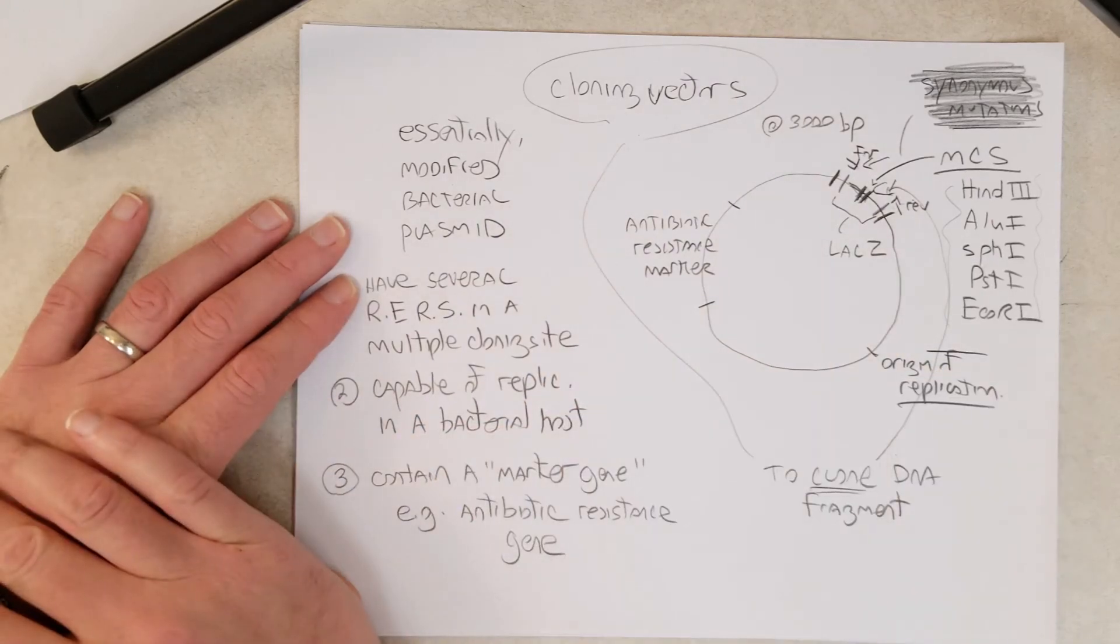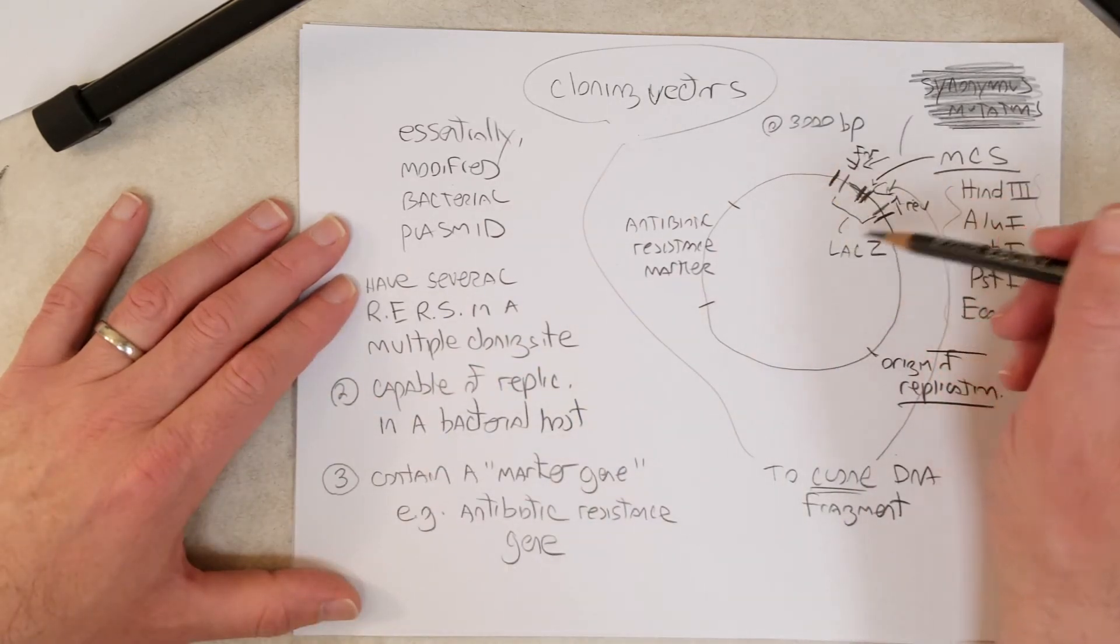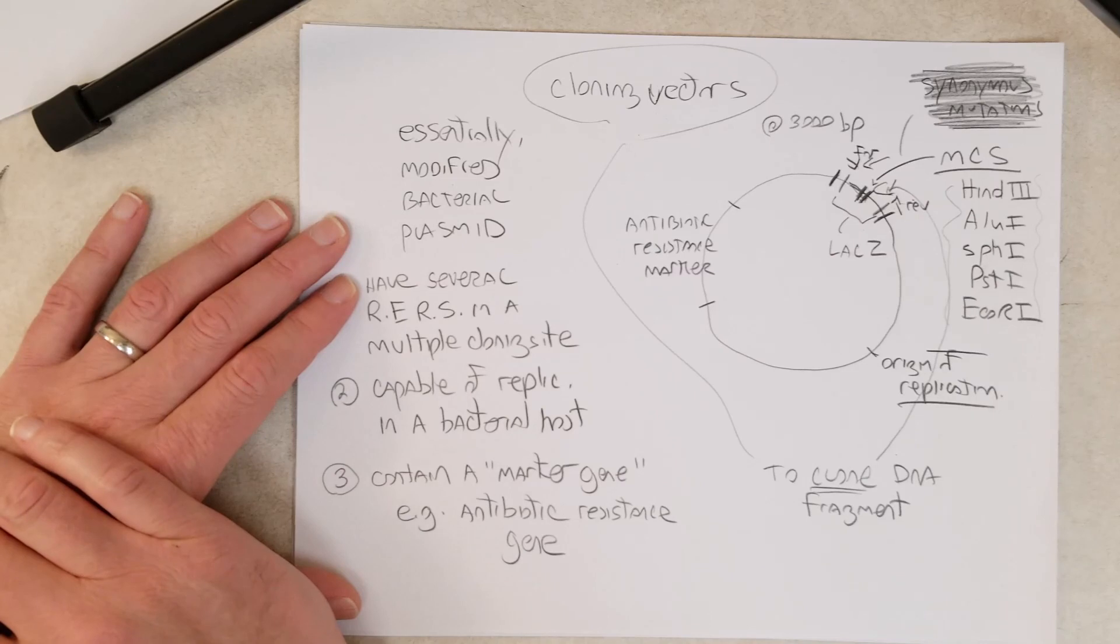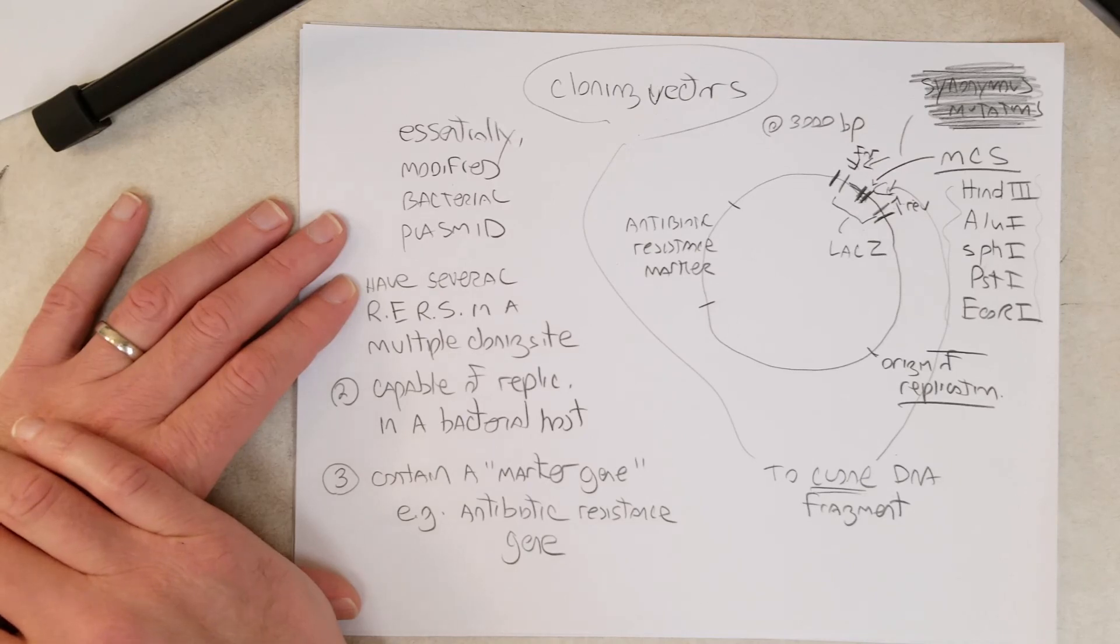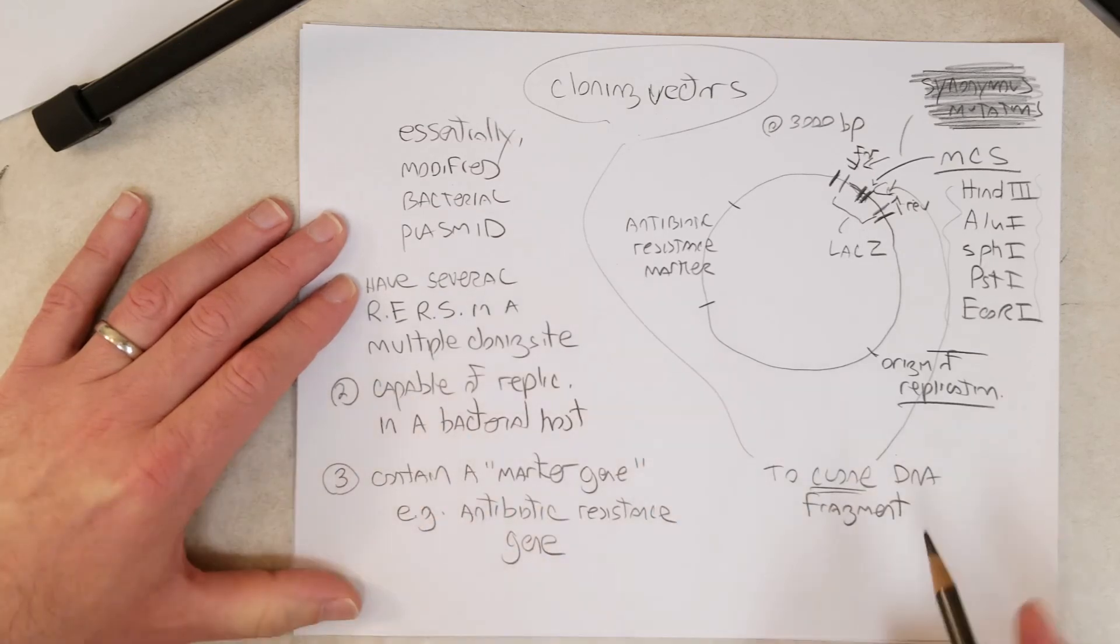We've seen one way where we can make many copies of a fragment, that's PCR. You can also make many copies of a DNA fragment by putting it into a plasmid, putting that plasmid into a bacterium, and having the bacterium make many copies of the plasmid with your fragment of interest. So, let's take a look at how to clone a DNA fragment.